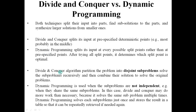Divide and conquer partitions the problem into disjoint subproblems, solves the subproblems recursively, and then combines their solutions to solve the original problem. Disjoint subproblems means independent subproblems.